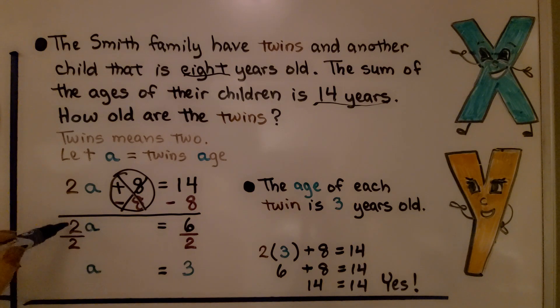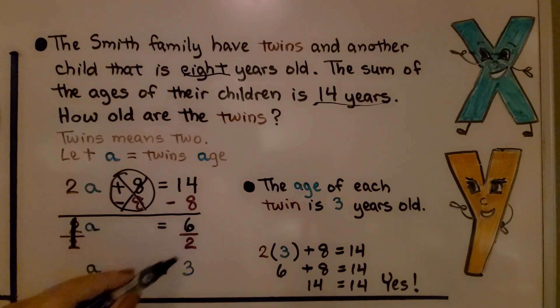We divide both sides by this coefficient, 2. We do the same thing on each side. And we have the same numerator and denominator, so that's technically a 1. We have 1A. We don't have to write the 1. And 6 divided by 2 is 3. We know the age of each twin is 3 years old.